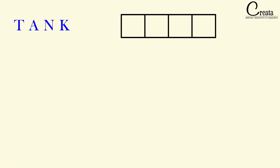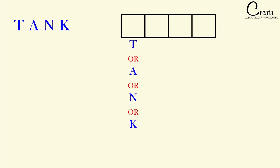Here we are having four letters T, A, N and K, and four vacant spaces to fill. In the first vacant place, we can fit any of the four letters — T or A or N or K. We are having one vacant position and four letters, so we can use T or A or N or K. Note that we are using the word OR here, and OR means addition. Further, suppose we have used one letter in the first place — in the second vacant place, we will be left with only three choices.